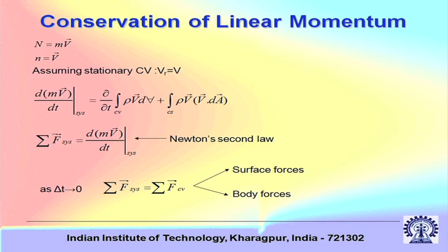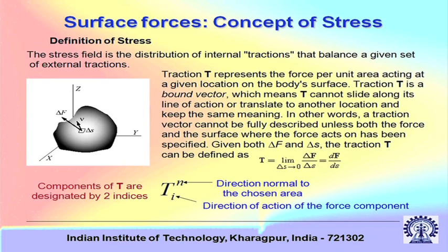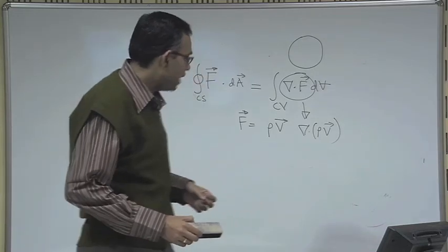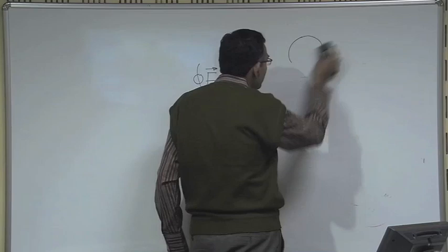In continuum mechanics, we talk about two types of forces. One is a surface force, distributed over the surface — for example, pressure force. The other is a body force, distributed over the volume of the body — for example, gravity. We will now characterize the concept of a surface force, introducing two important concepts: the traction vector and the concept of stress.